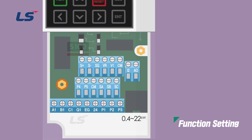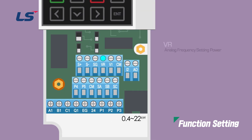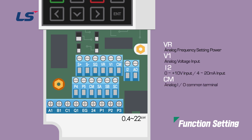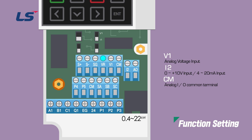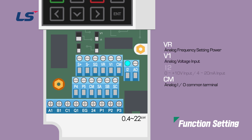The analog input terminals include VR, V1, I2, and CM terminals, and there is an analog voltage current input terminal setting switch. The VR terminal is a 0 to 10 volt output terminal, V1 terminal is an analog voltage input terminal, and I2 is a 0 to 10 volt and 4 to 20 mA input terminal. CM is a common terminal for analog input and output.